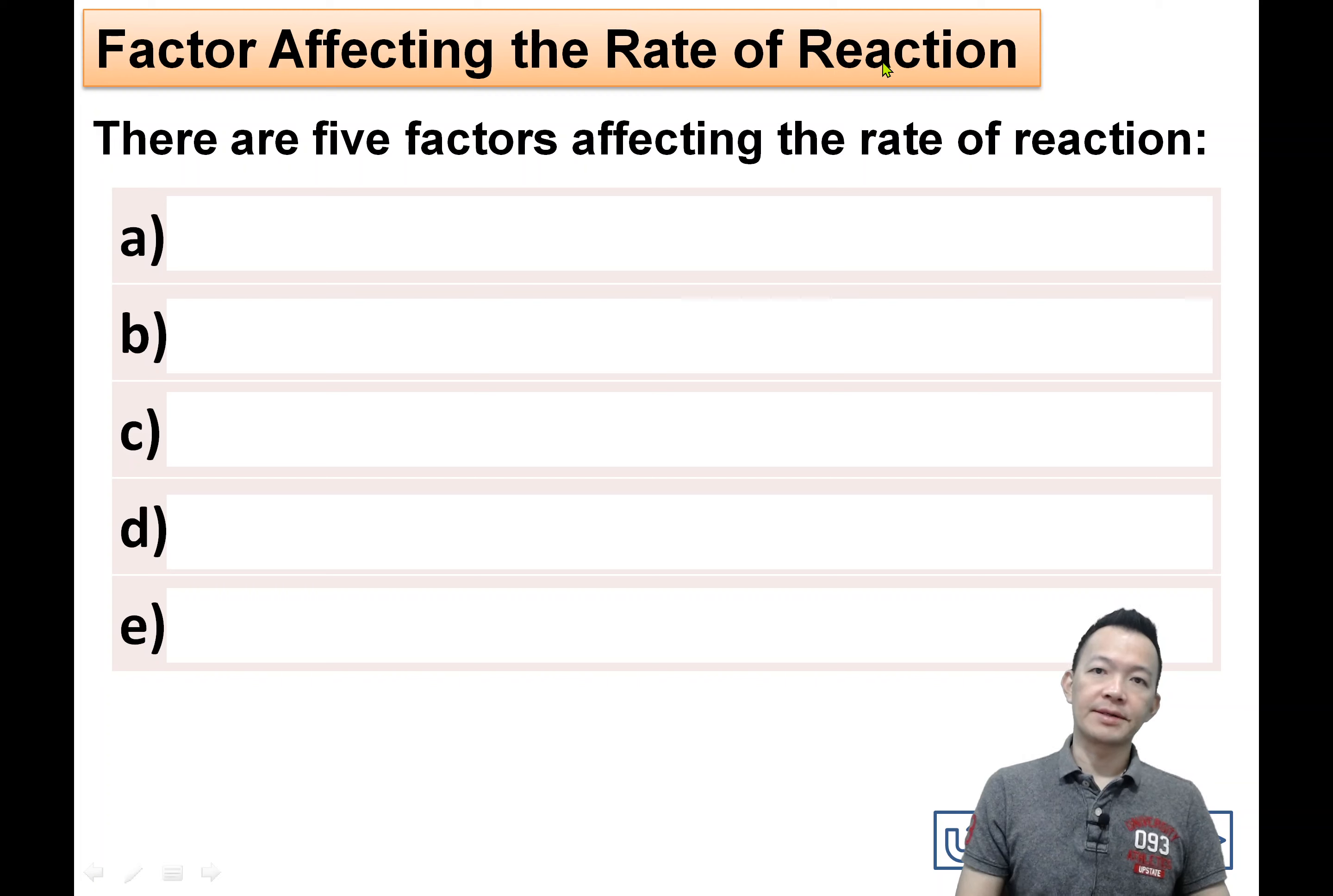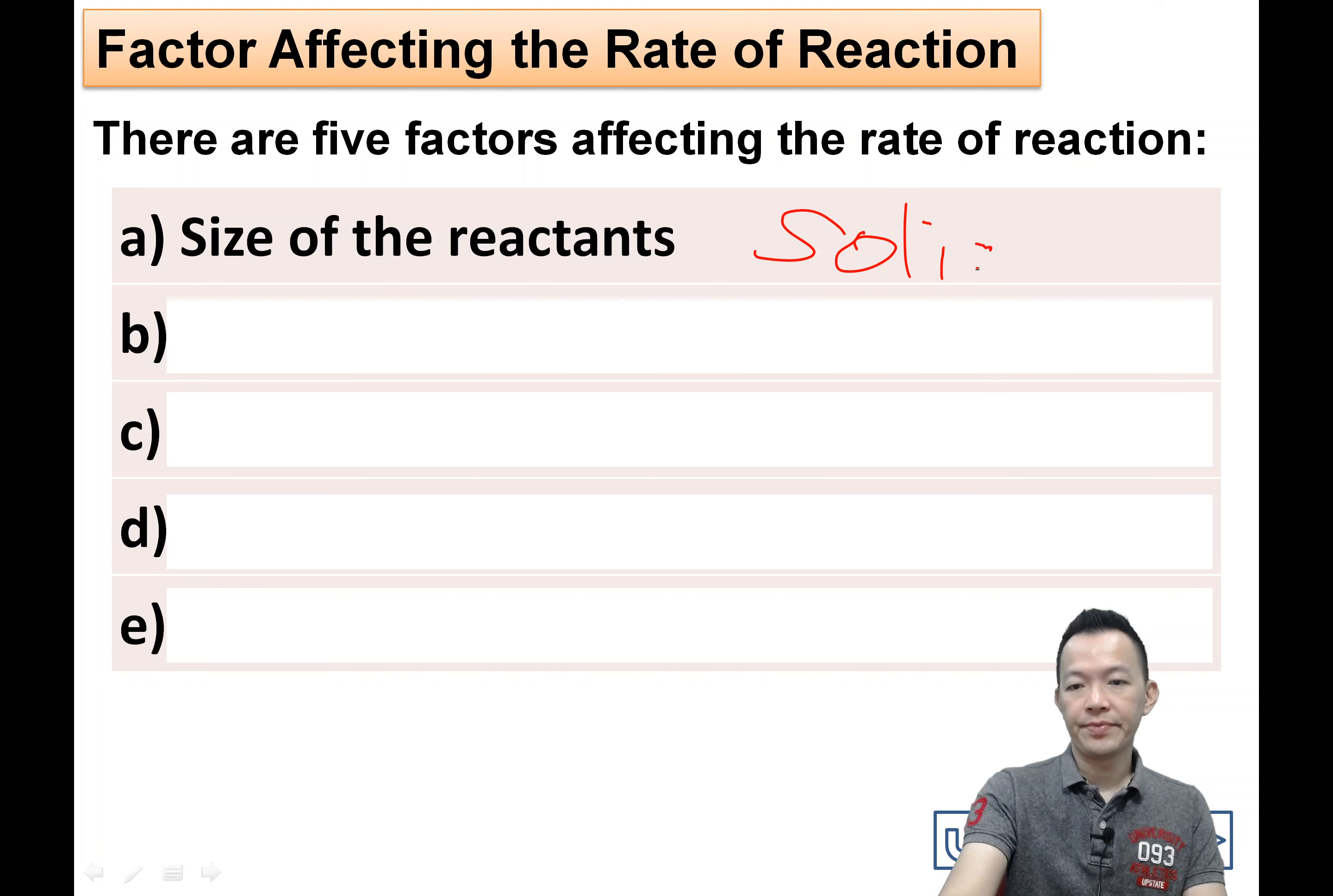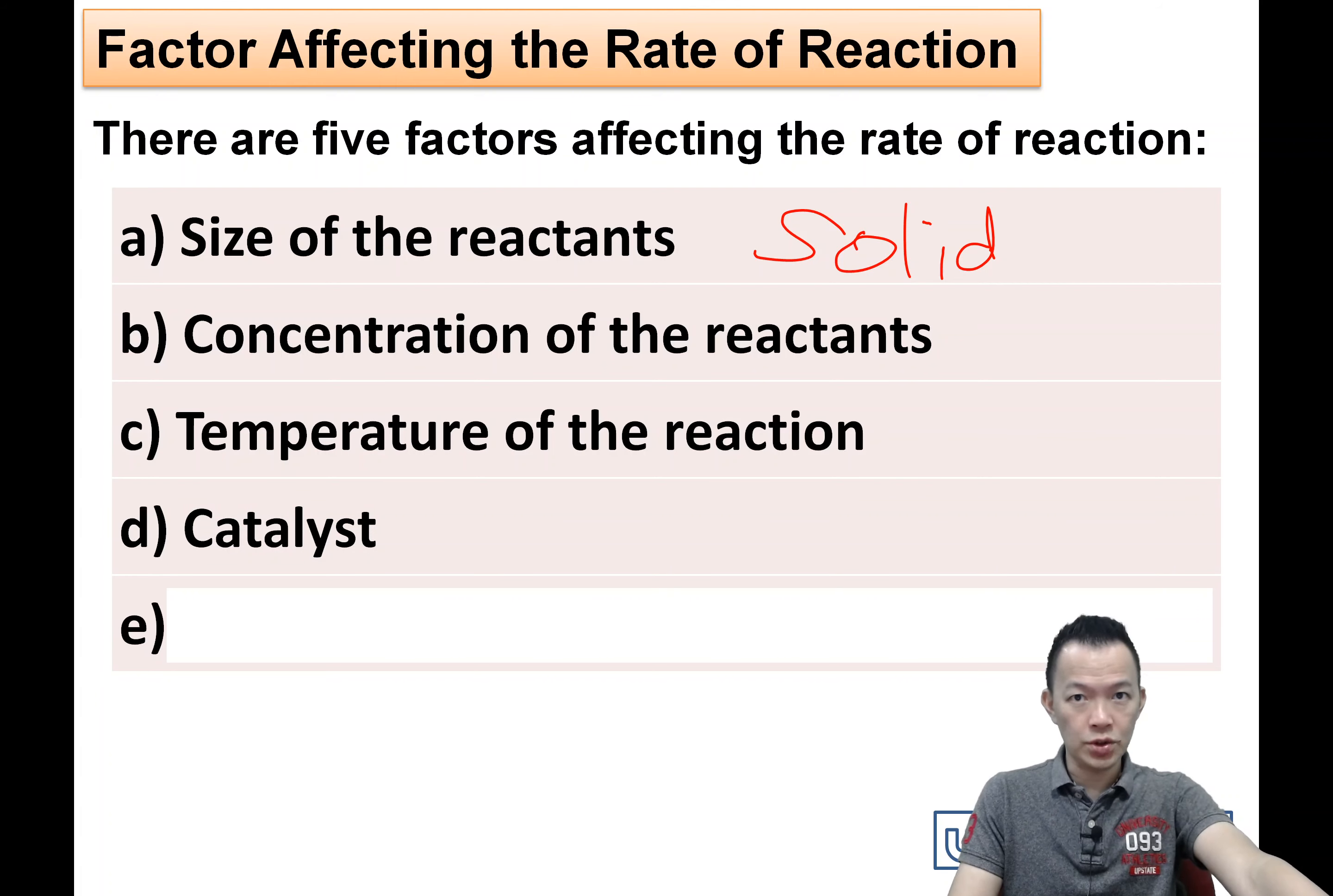There are 5 factors affecting the reaction. Number 1, size of reactant. When we talk about the size of the reactant, the reactant must be solid. Number 2, concentration of the reactants. This one we talk about the solution, the liquid. Number 3, temperature of the reactions. The temperature normally means the solution, the temperature of the solution.